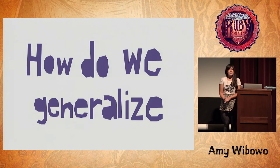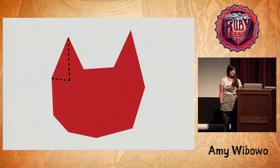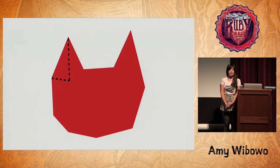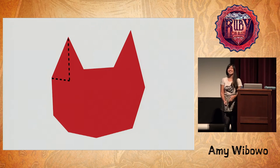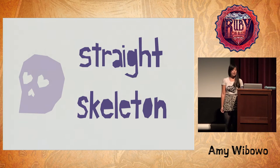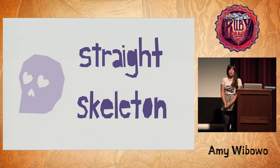So how do we generalize this for getting all the edges of a polygon to line up? What happens if we have a complicated polygon and some of the angle bisectors intersect with one another? We would calculate what mathematicians call a straight skeleton.